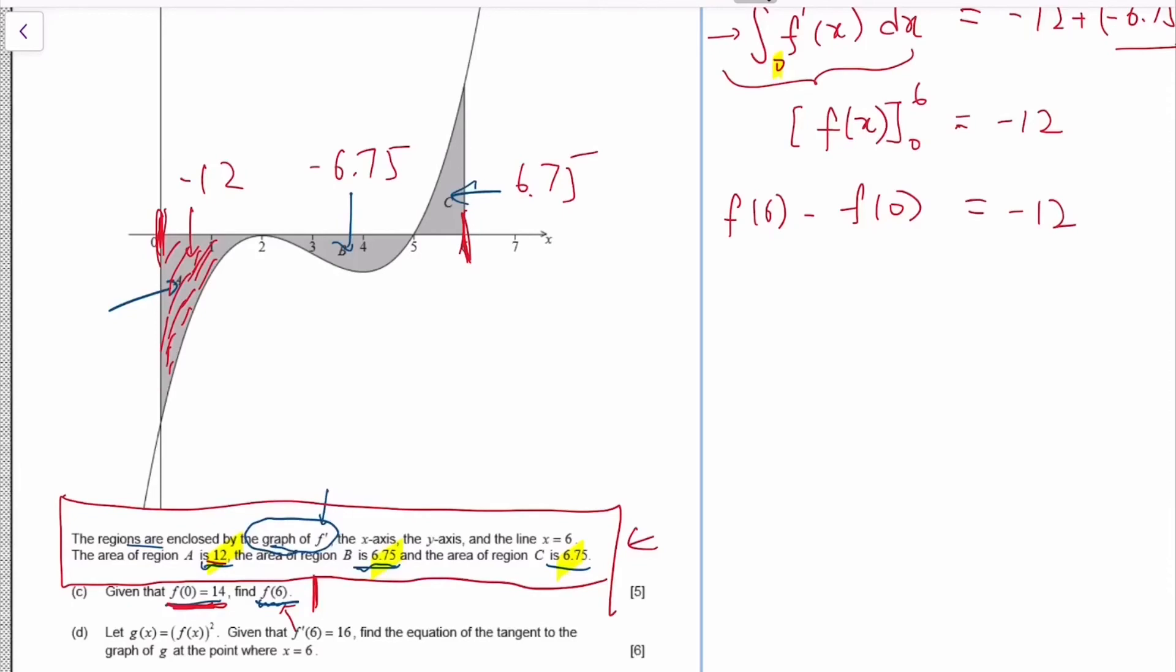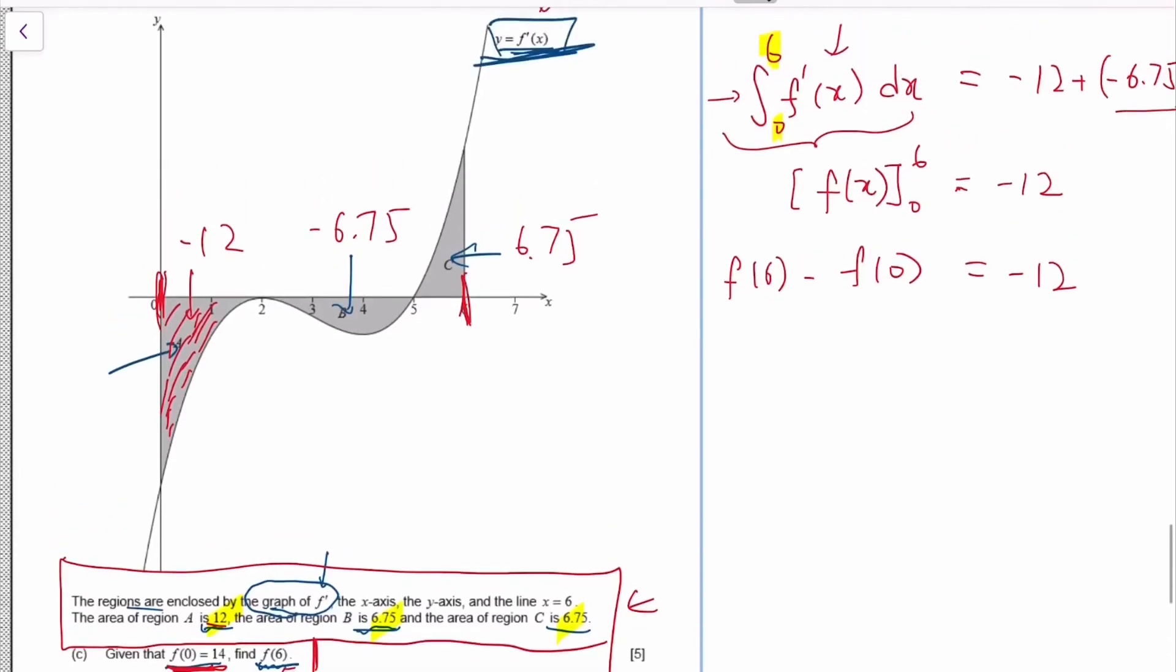So at the beginning you might be wondering why did I choose to integrate from 0 to 6? In some sense it's because I want to use all the information they give me. If they give me all three regions, probably I need all three regions. But if you didn't get that the first time, maybe you start with 0 to 2 to begin with. Then you realize that you get F(2) here minus F(0), and then that might make you realize that you should just integrate from 0 to 6.